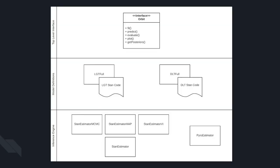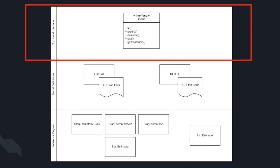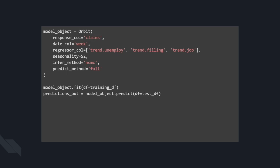Before we dive into the model math, I want to go over the package design and how we intended it to be used and how we intend to extend it in the future. The top-level orbit class is a simple interface with a high level of abstraction, meant to be similar and familiar to other high-level stats and ML packages in Python. An example call looks like this: you instantiate the model object, then call object.fit and object.predict on the training and test datasets, where training does the Stan inference to learn the posteriors, and predict takes those posterior estimates to predict the y-hats.